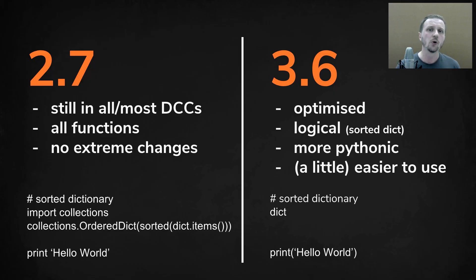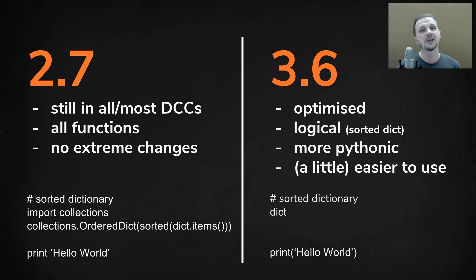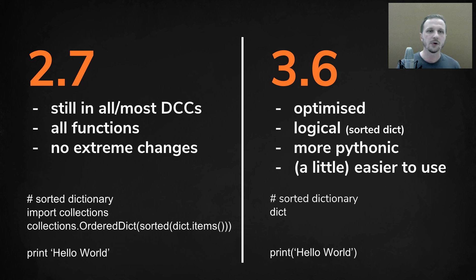Another thing you need to know about Python: there are two main versions out there, 2.7 and 3.6. We still have 2.7 mainly because most DCC packages like Maya, Nuke, and Houdini still use the old 2.7 version — it's still implemented inside them. There's nothing wrong with that because it provides mostly all the functions you will need, and there aren't extreme changes compared to the newest version.